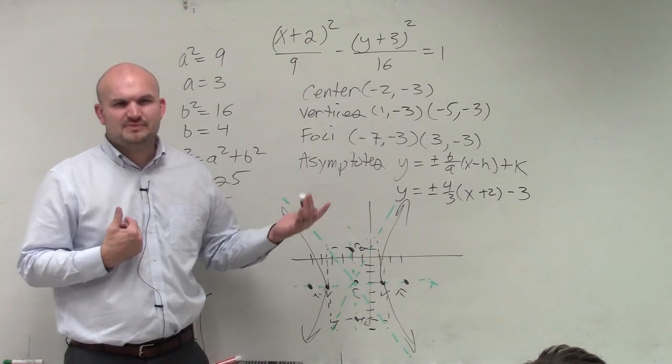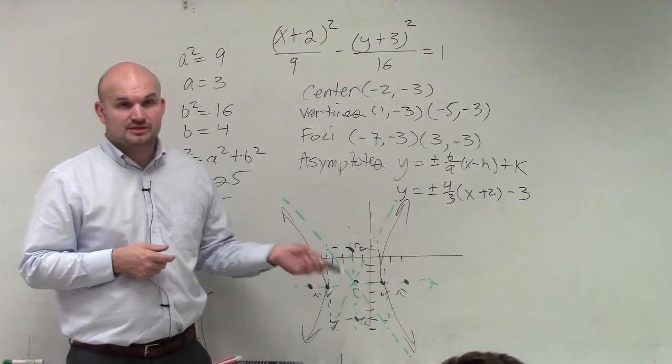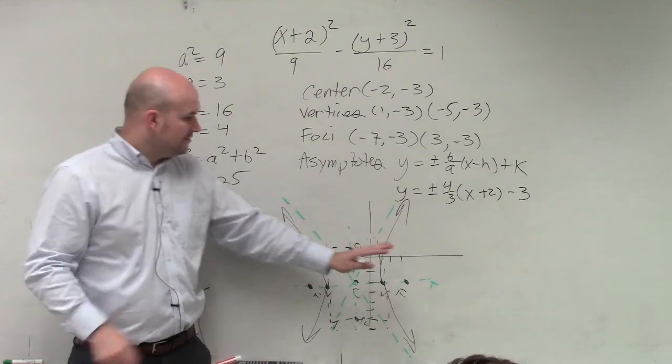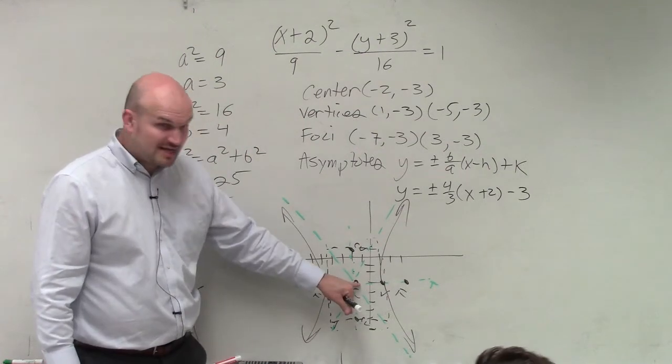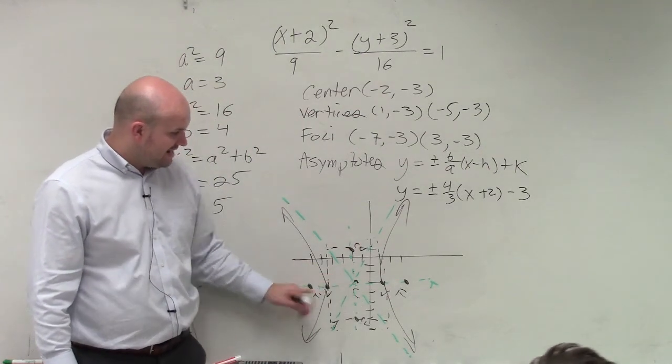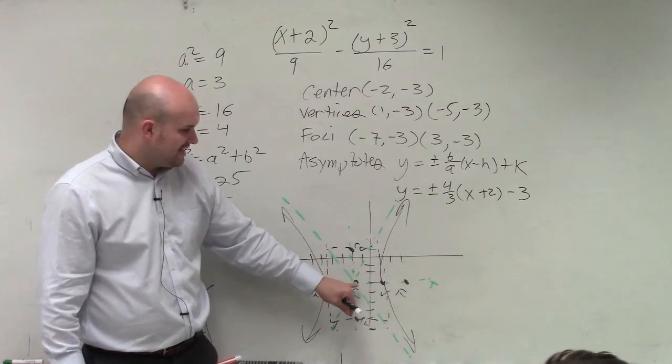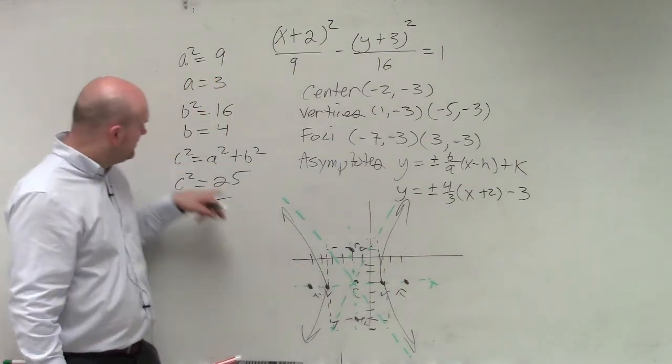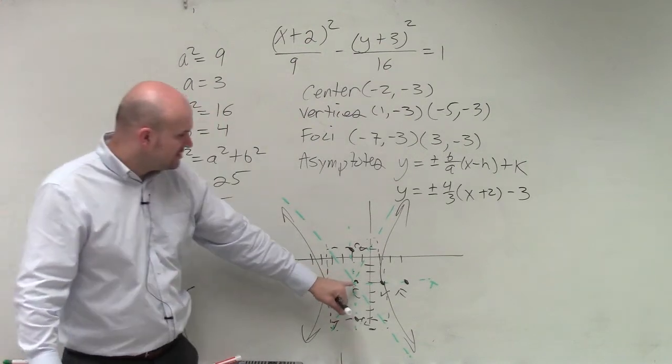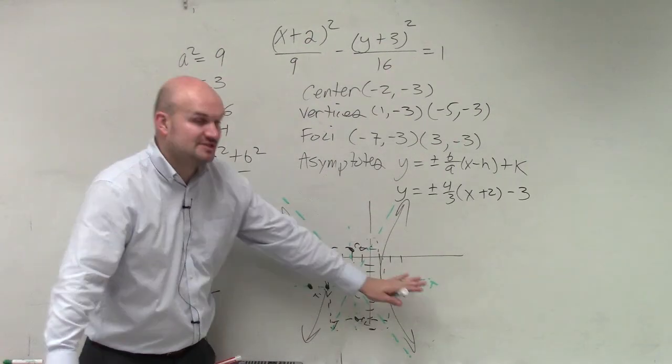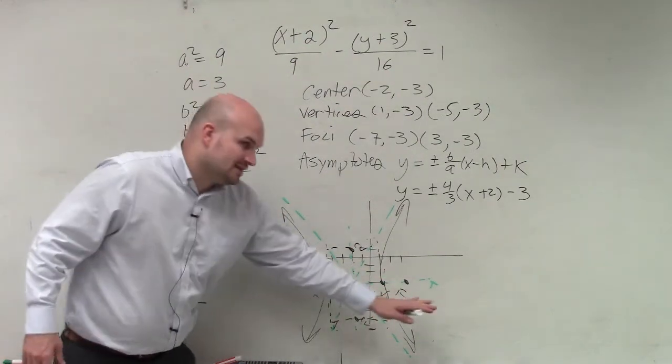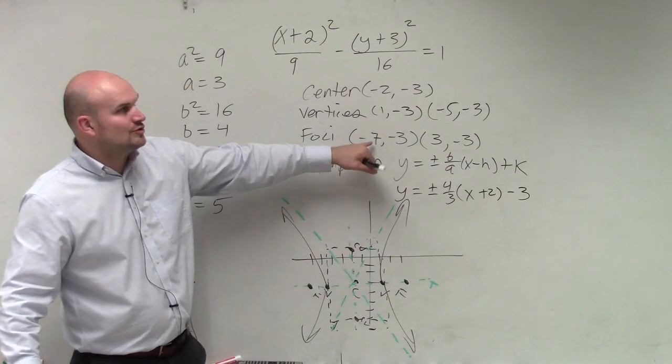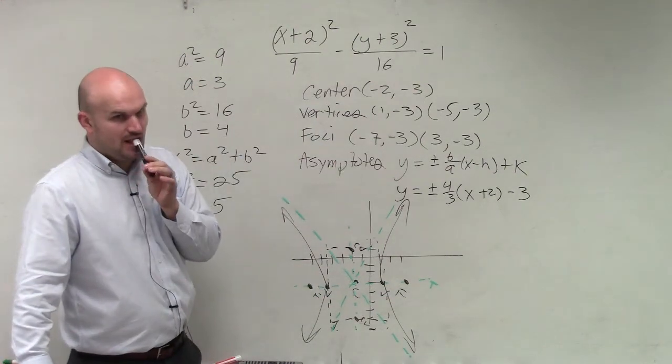Does that answer your question, though? I made a mistake. But do you still understand how I got those? They go along the transverse axis. Here's your center. The foci go left and right a distance of c. So from the center, you go 5 to the right, 5 to the left, the plus or minus. A is the distance from your center to your vertices, plus 3, minus 3. But you're going left and right, so you're adding them to the x-coordinate.